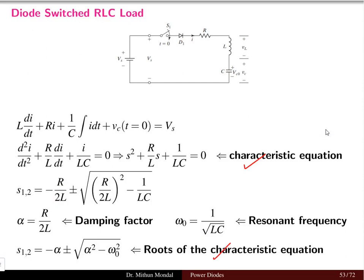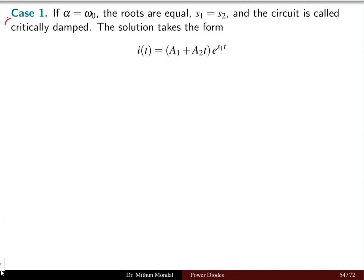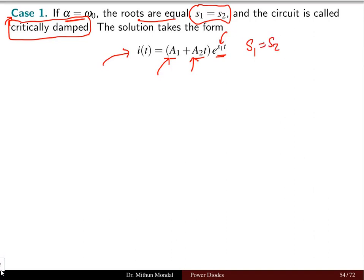These roots of the characteristic equation can be written in compact form as: −α ± √(α² − ω₀²). There can be three cases. Case 1: if alpha equals omega_0, the roots are equal (S1 = S2). This circuit is known as a critically damped circuit, and the solution has the form I(t) = (a1 + a2·t)·e^(S1·t). The constants a1 and a2 are obtained from the boundary equations.